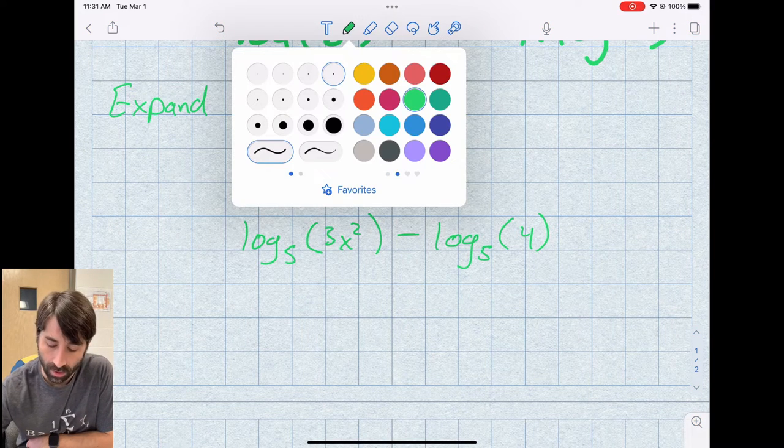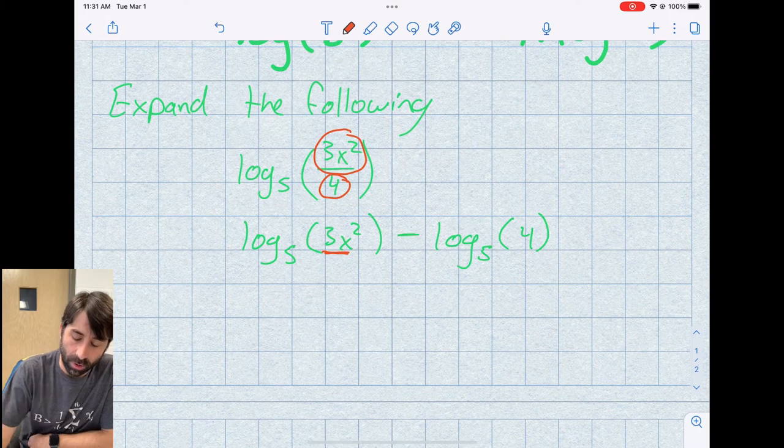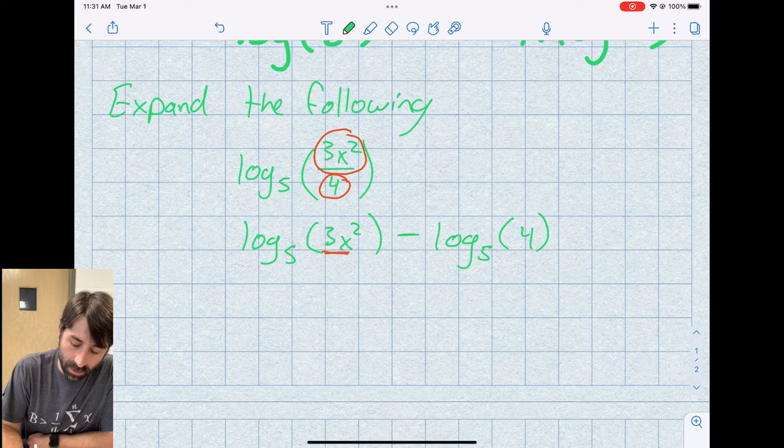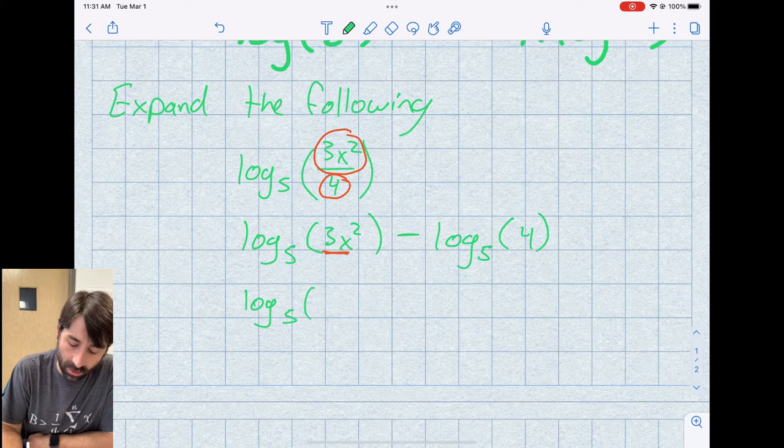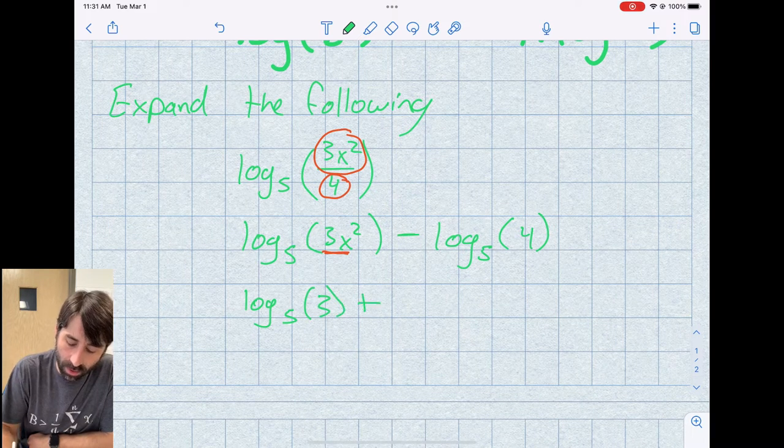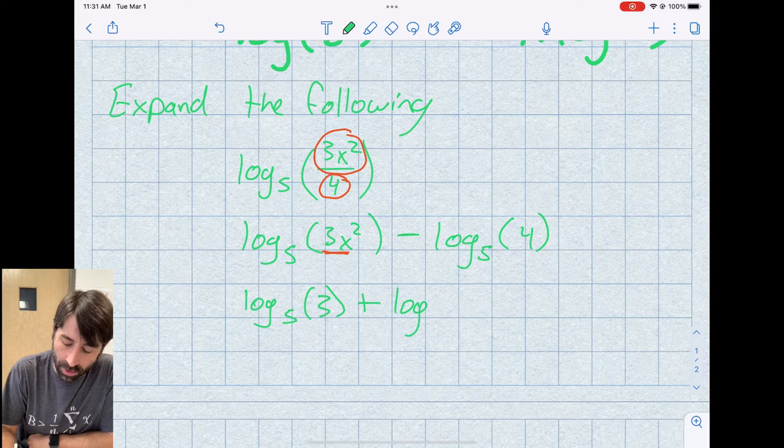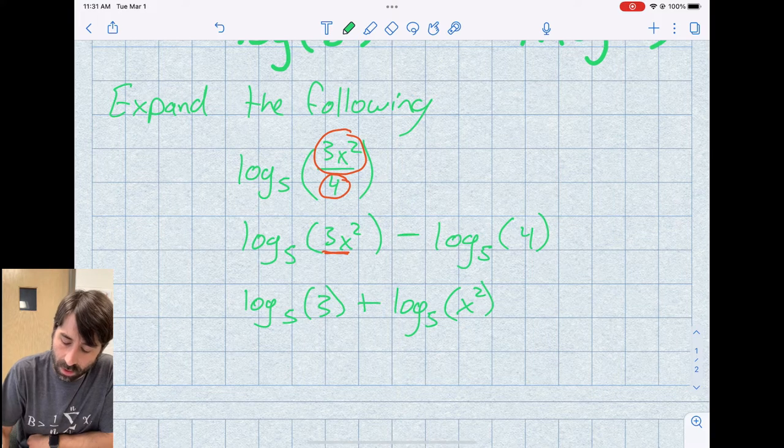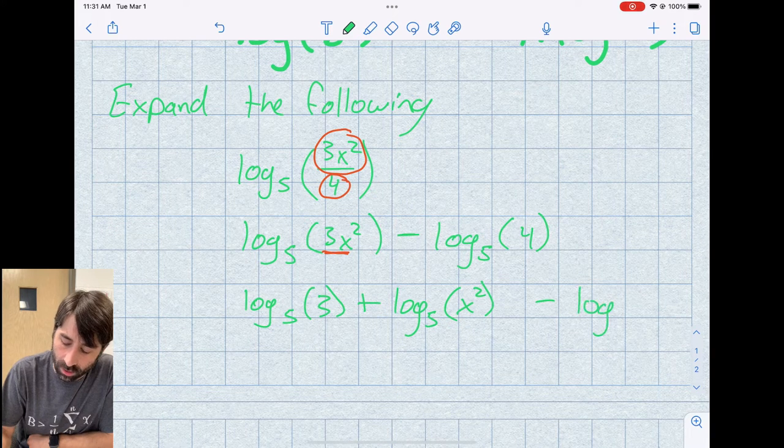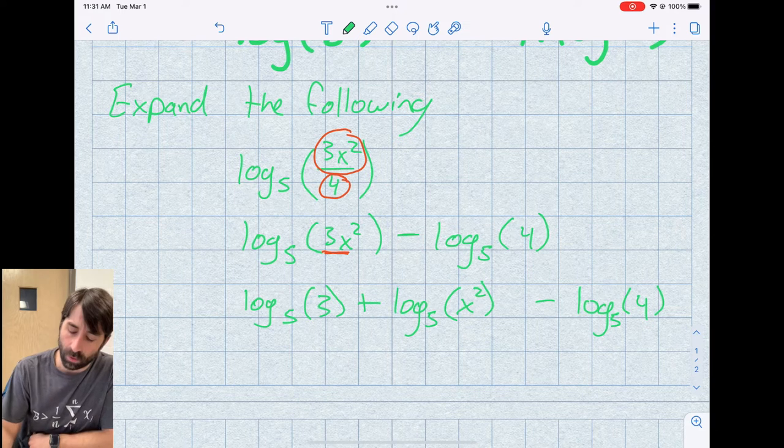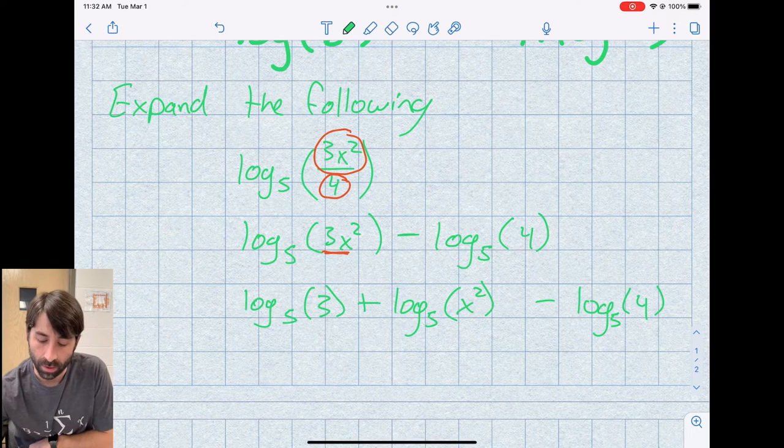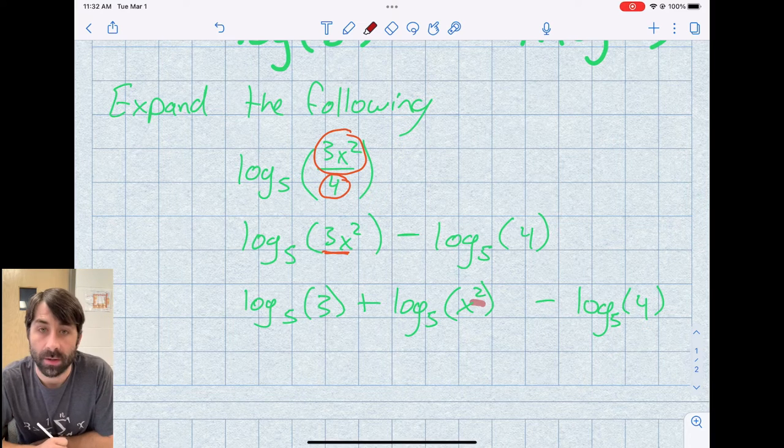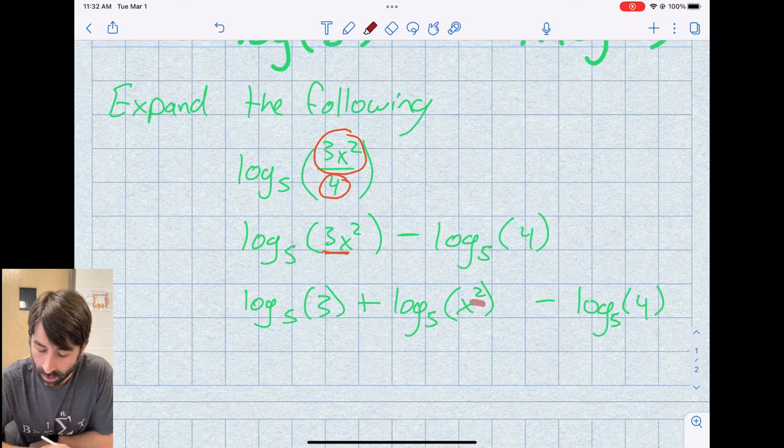So now in this first term here, I have a product. So I can break that apart and turn it into a sum. So this turns into log base five of three plus log base five of x squared minus log base five of four.